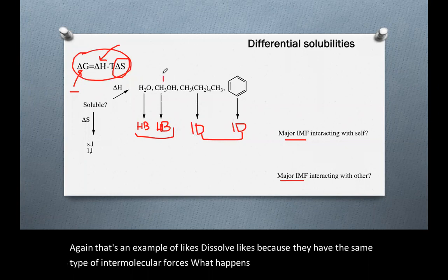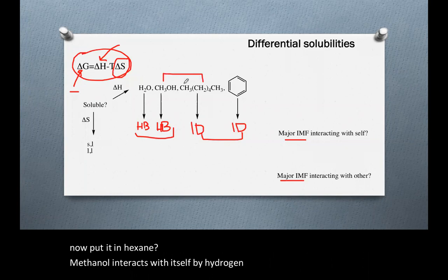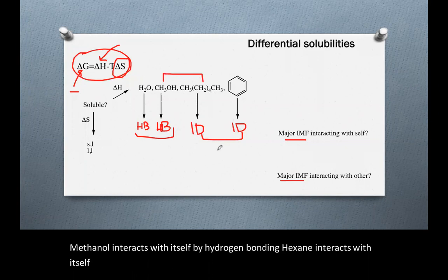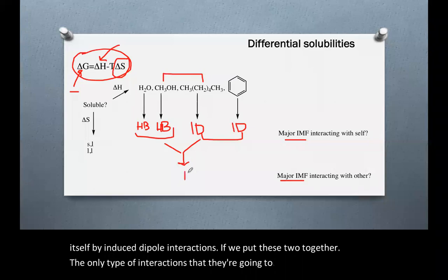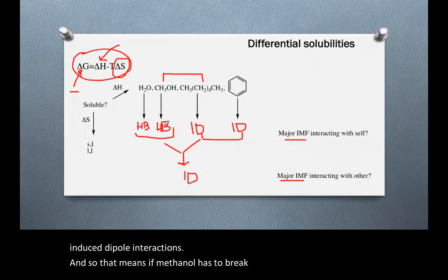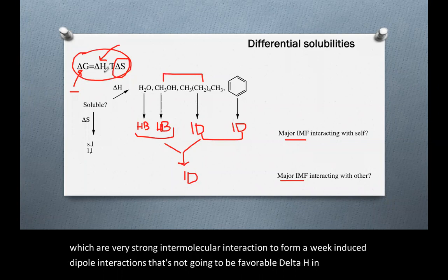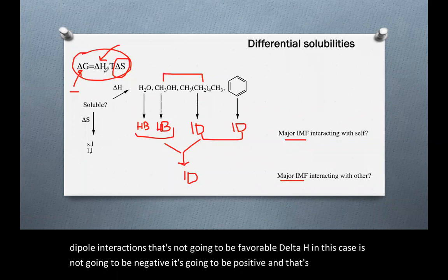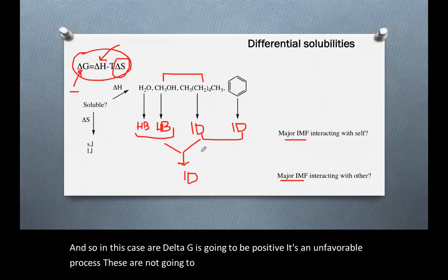What happens if we take methanol and put it in hexane? Methanol interacts with itself by hydrogen bonding; hexane interacts with itself by induced dipole interactions. If we put these two together, the only interactions they'll have with each other are induced dipole interactions. Methanol has to break hydrogen bonding — a very strong intermolecular interaction — to form weak induced dipole interactions. That's not favorable. Delta H is going to be positive, so delta G is going to be positive — an unfavorable process. These are not going to mix.